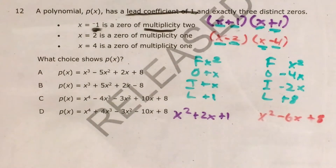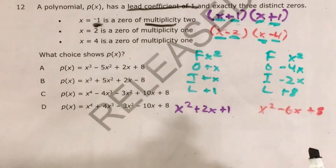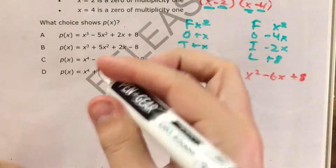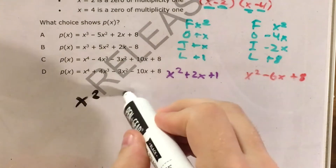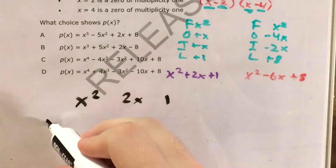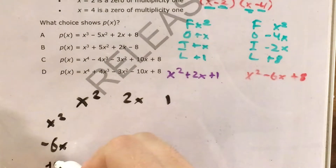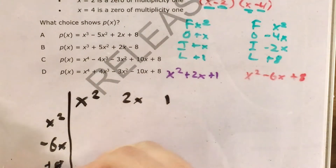Now, to multiply these trinomials, I'm going to use something you might remember from earlier grades — the box method. I'm going to set up each of my trinomials in a grid in this way.